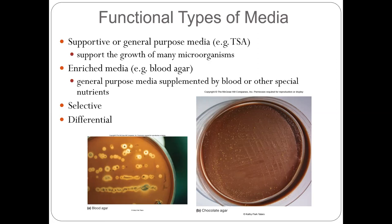Based on the support medium, we can add 5% sheep blood. So tryptic soy agar — if we add 5% sheep blood, it becomes blood agar. Blood agar, because of the 5% sheep blood, becomes very red. The blood has a high amount of nutrition, so it is called enriched medium, which means it can support bacteria to grow dramatically. That's called enriched medium.